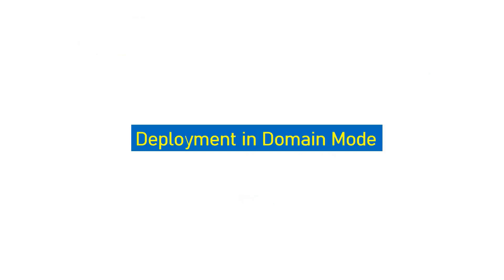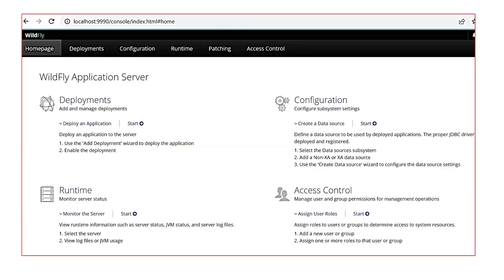Now let's talk about deployment in domain mode. In domain mode we know that we have multiple JBoss instances running — they could be in the same server group or there could be multiple server groups, with multiple JBoss instances running inside each. When you go for deployment of an application in domain mode, you need to target the application to a particular server group.